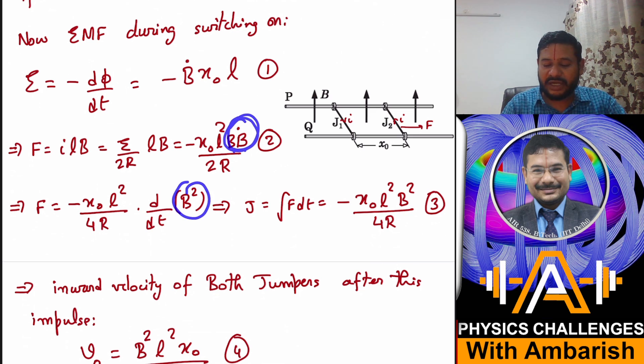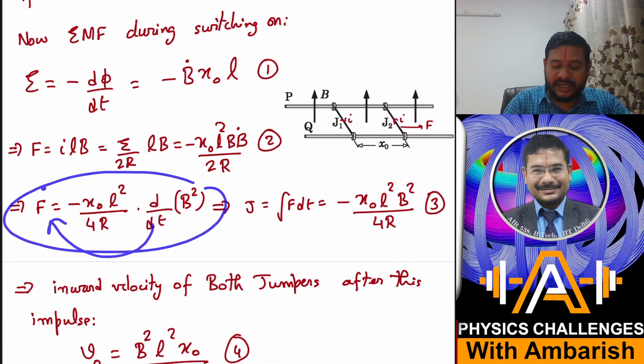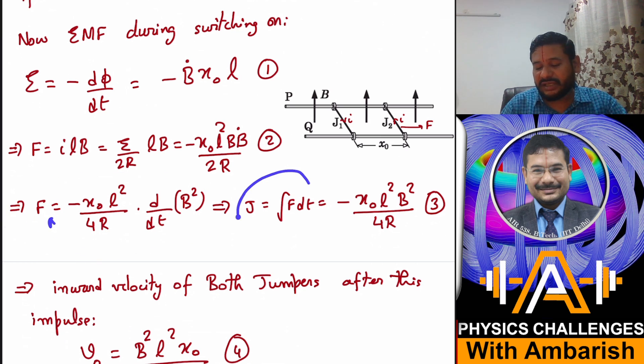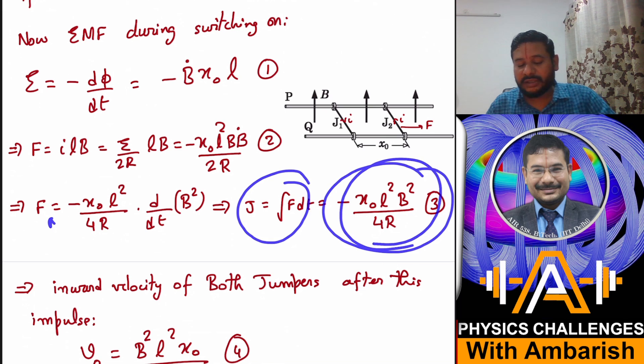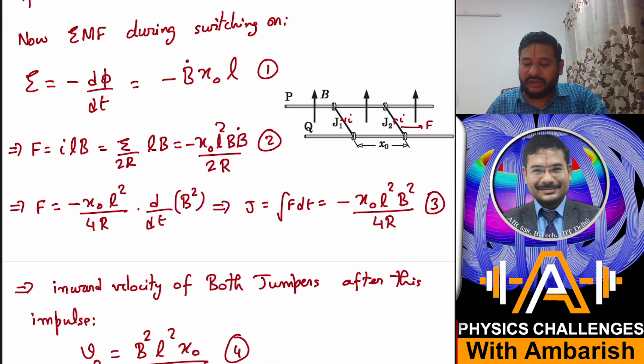It becomes a perfect differential right. And impulse then is simply you take dt to this side, so you get the impulse of the magnetic force as integral F·dt, that is minus x₀·l²·B²/(4R).